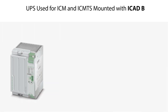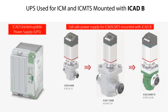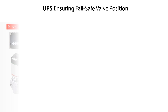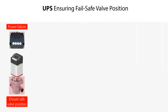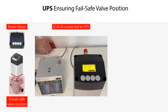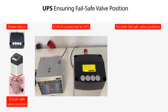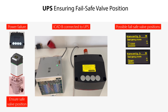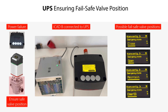Here you see an example of the Danfoss ICAD Uninterruptible Power Supply, or simply called UPS. This UPS is designed to be used as a fail-safe power supply for the ICAD-B mounted on ICM and ICM-TS motor operated valves. In the event of power failure, there is a need to ensure that the ICM and ICM-TS valves enter a safe valve position. Once the ICAD-B is connected to the UPS, during power failure this fail-safe solution will give the following possible valve positions: the ICM and ICM-TS closes, opens, maintains current position, or enters a specific valve opening degree. The actual valve position depends on how the UPS is configured in the ICAD-B.